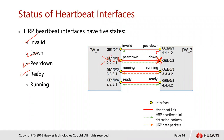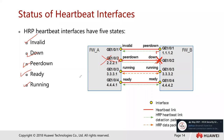Ready means both physical and protocol statuses are up and configurations are correct — the local heartbeat interface has received heartbeat link detection reply packets from the peer. Running is when multiple heartbeat interfaces are in a ready state and the firewall sets the first configured one to running. The running interface is used to send HRP heartbeat packets, data packets, link detection packets, VGMP packets, and consistency check packets.